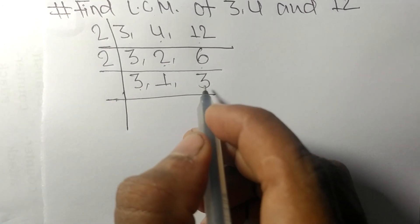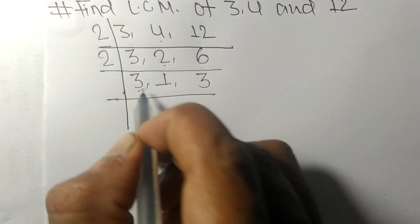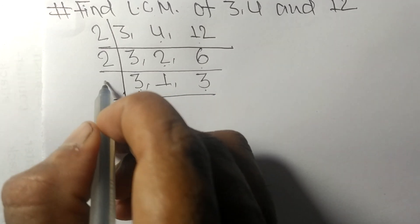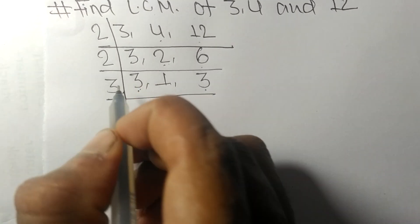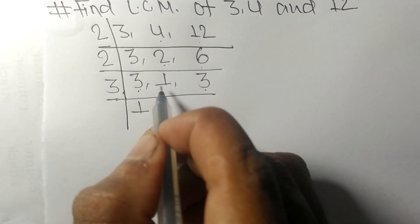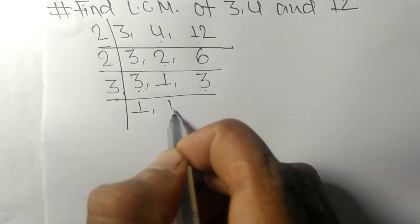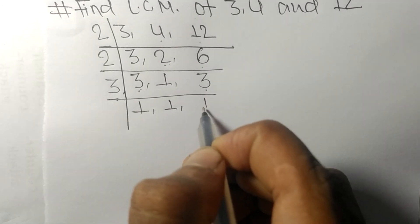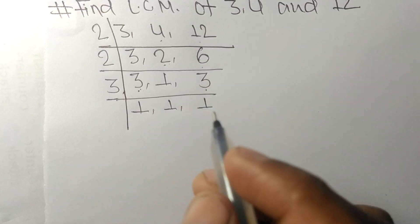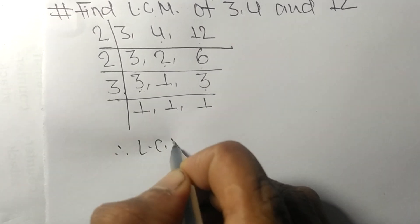Among 3, 1, and 3 — both 3s are exactly divisible by 3. 3 times 1 means 3, and 1 is not divisible so it stays the same. 3 times 1 means 3. Now we have our divisors to calculate the LCM.